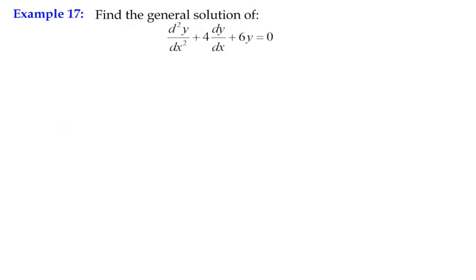Let's jump right into the example. Find the general solution of this second order differential equation. It's homogeneous and we always check to see what the right hand side looks like. It's homogeneous, equal to zero, so straight away I can compile my auxiliary equation.